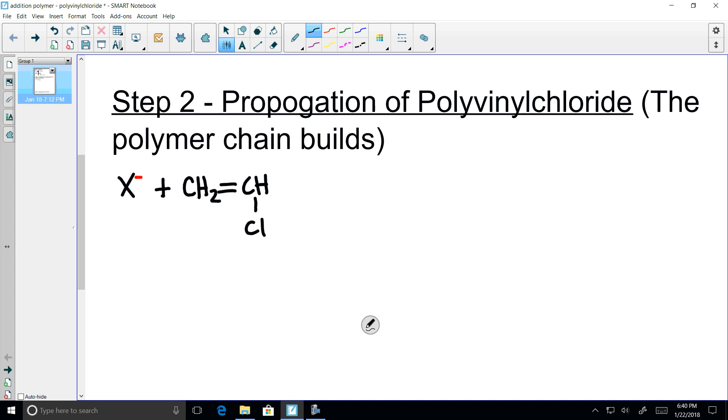Whatever the vinyl chloride monomer looks like in the question, you need to arrange your monomer exactly the same way for every addition free radical polymerization reaction.